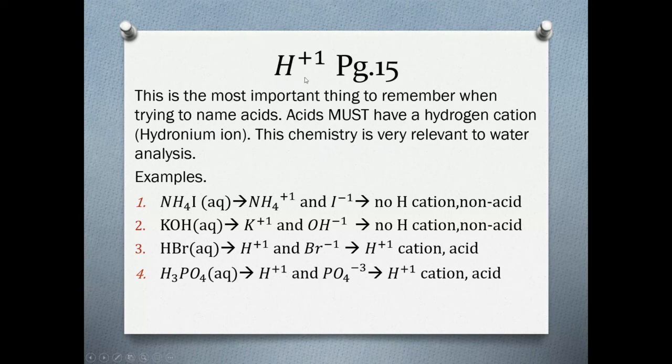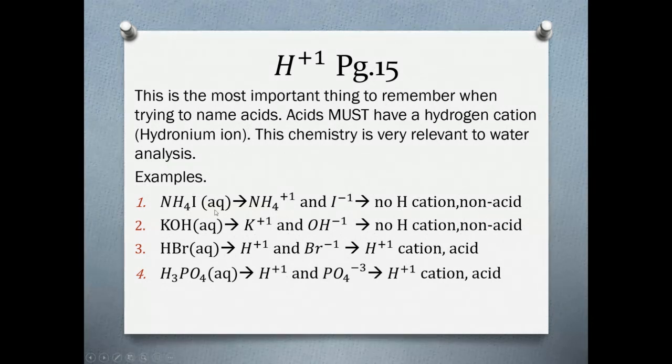Next one, potassium hydroxide. Is it an acid? What do I have here for cation? My cation is potassium with a plus one charge. My anion is hydroxide with negative one charge. Do I have a hydronium ion in here? I do not have a hydronium ion. So no hydronium, not an acid. Next example, HBr. What's it made of? The cation always first. H plus. Wow, look at that. It's got the H1 cation. Therefore it is an acid. Doesn't have oxygen, so it is hydrobromic acid.